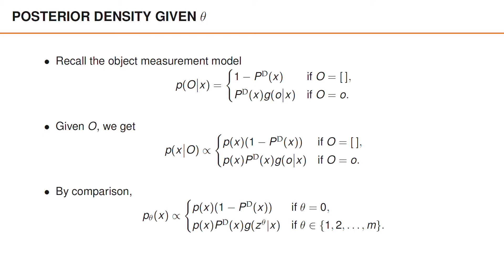If we now compare this to the expression for p_θ(x), we see an interesting relation. If θ equals 0, which implies that the object is undetected, p_θ(x) is identical to the posterior of X given that O is an empty matrix. This makes sense since O is an empty matrix when the object is undetected.